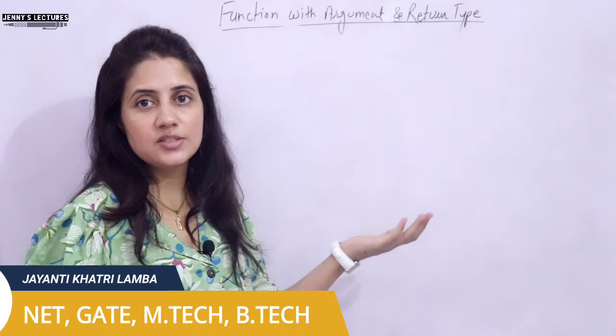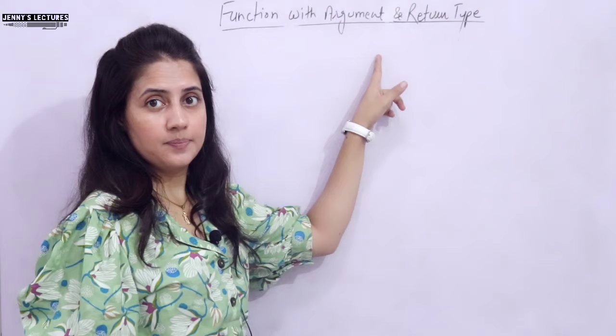In this series on learning C programming, we are discussing the classification of functions in C. We have already discussed three classifications, so we are left with the last one: function with argument and with return type. We will discuss this in this video with a proper program.